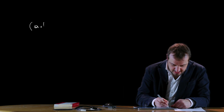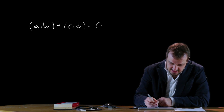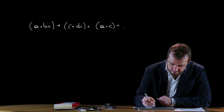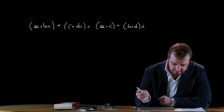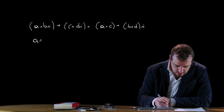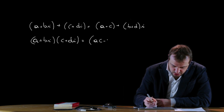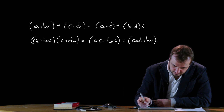Let's look at some operations with complex numbers — in particular addition, subtraction, and multiplication. The sum of complex number (A + Bi) and complex number (C + Di) gives a complex number with real part (A + C) and imaginary part (B + D)i. For multiplication, (A + Bi)(C + Di) gives a complex number with real part (AC - BD) and imaginary part (AD + BC)i.